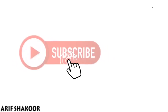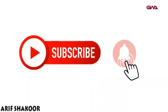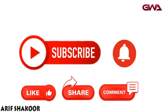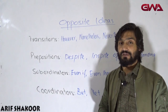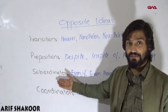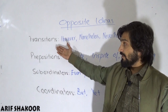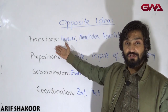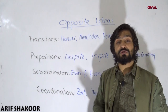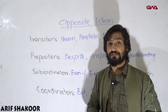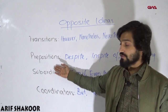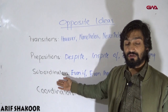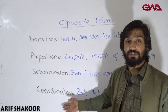To combine opposite ideas in a paragraph, we have different ways. Number one: by using transitions, which are also called discourse markers or conjunctive adverbs. By using prepositions. By using subordinators or subordinate conjunctions. And by using coordinators or coordinate conjunctions.